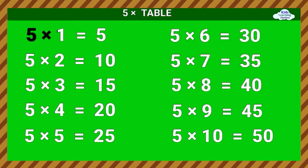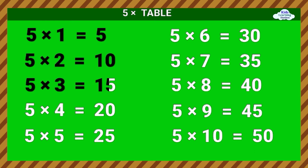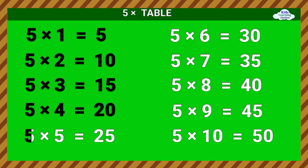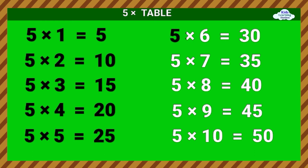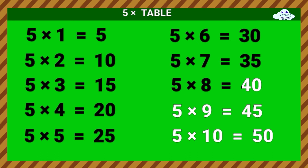5 times 1 equals 5. 5 times 2 equals 10. 5 times 3 equals 15. 5 times 4 equals 20. 5 times 5 equals 25. 5 times 6 equals 30. 5 times 7 equals 35. 5 times 8 equals 40.